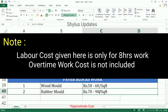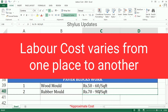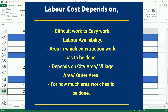Labor cost varies from one place to another. Labor cost mainly depends on the following factors: first, difficulty of work; second, labor availability; third, the area in which construction work has to be done; fourth, whether it is a city area, village area, or outer area; fifth, the total area for which work should be done.